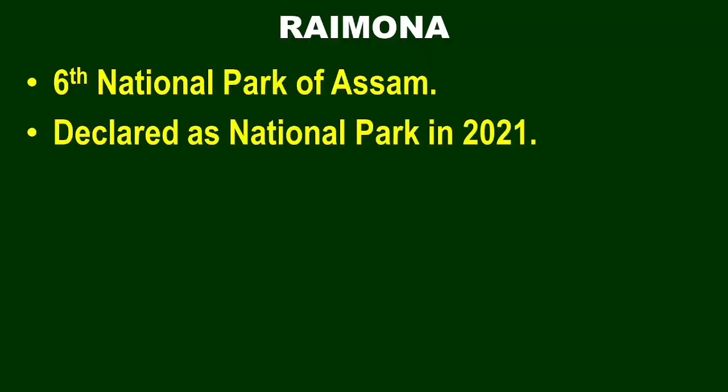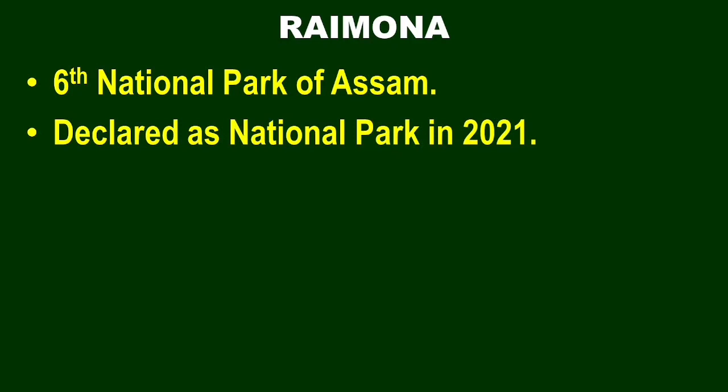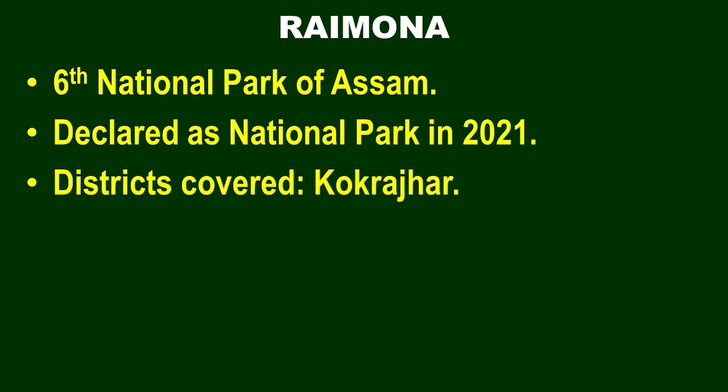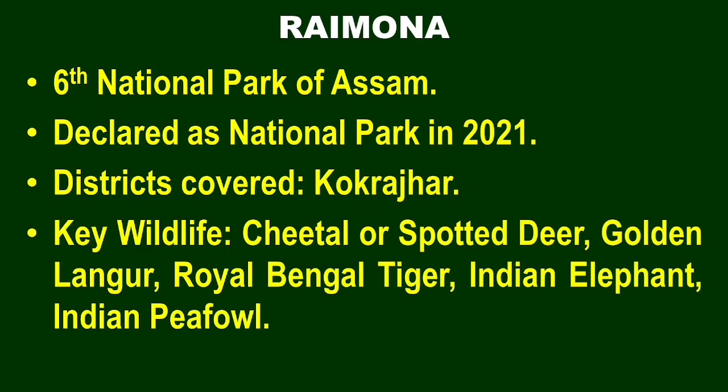Coming to the sixth national park: Raimona National Park. It is the sixth national park of Assam, declared as a national park in 2021. It covers Kokrajhar district. The main wildlife includes spotted deer, Golden Langur, Hoolock Gibbon, Royal Bengal Tiger, Indian elephant, and peacock, which is very important here.